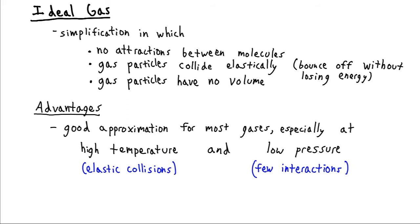The advantages of this model: it's a very good approximation for a large number of gases, especially at high temperatures, where the molecules have a lot of energy when they collide, making those collisions very elastic. It's also a very good approximation at low pressures, where we have very few molecules bouncing into each other fairly rarely, so there are very few interactions — making it a good approximation to say there are no attractions between the molecules.